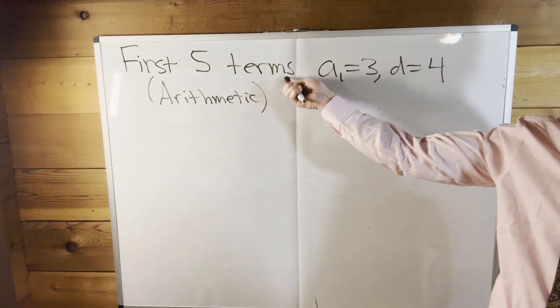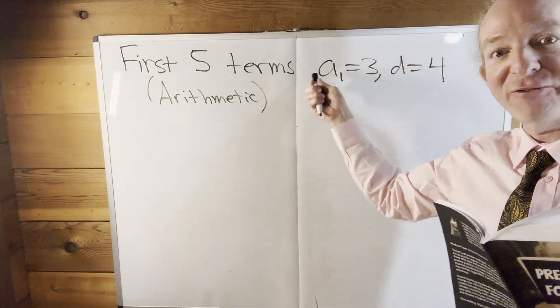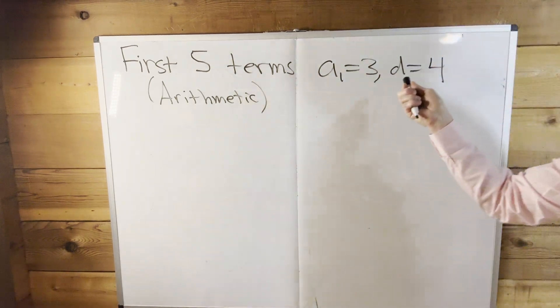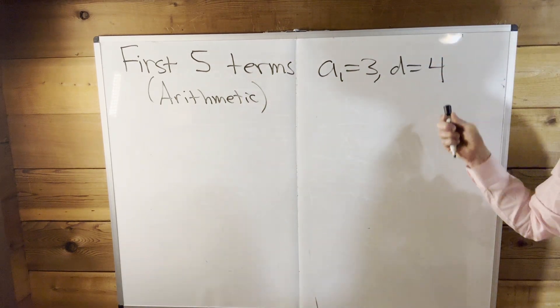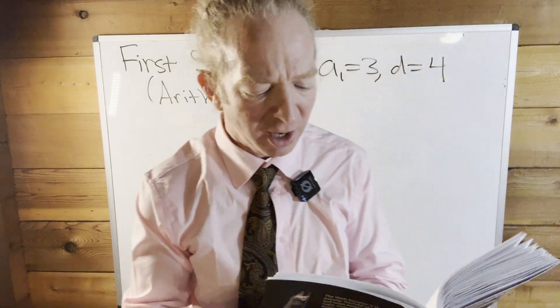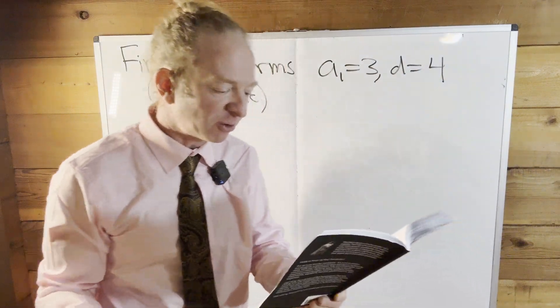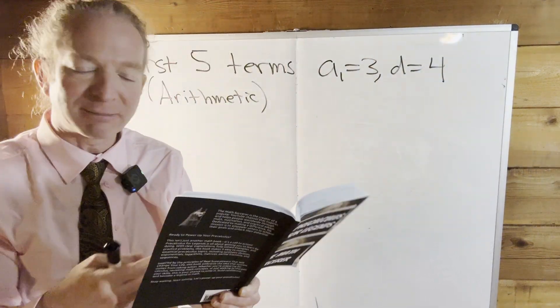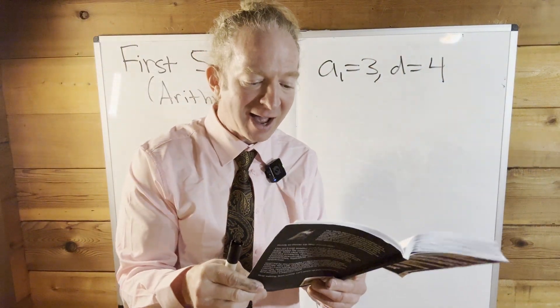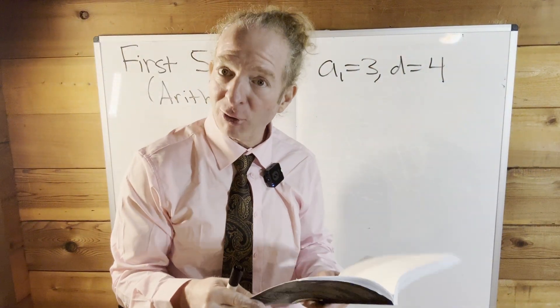We're going to find the first five terms. The first term is a sub one, which is three, and d is four. d is the common difference. There are a couple different ways to do it — I'm looking at my book here, and I did it using a formula.